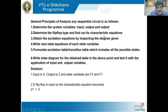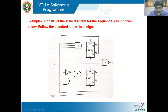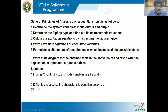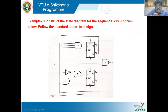Step two: determine the flip-flop type and its characteristic equation. The flip-flop used is a D flip-flop. The characteristic equation of a D flip-flop is Q+ = D. That is the next state simply equals D. We then use this to write the next state equations for F1 and F2.